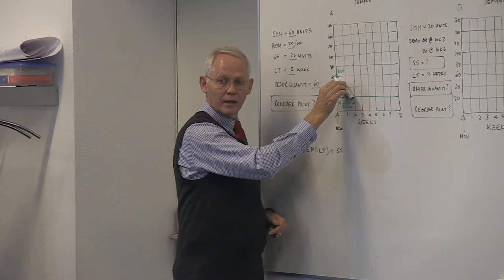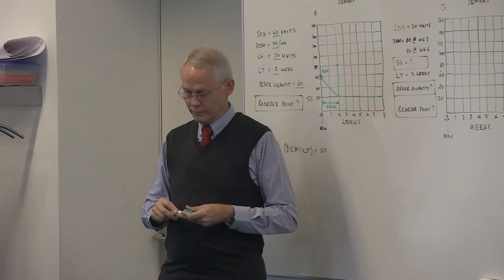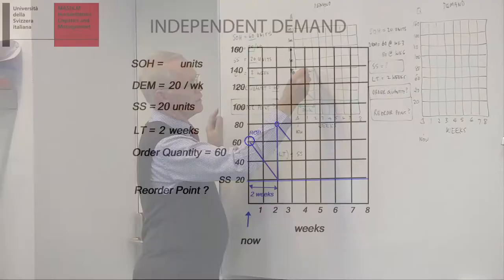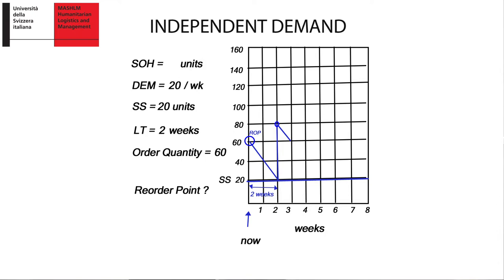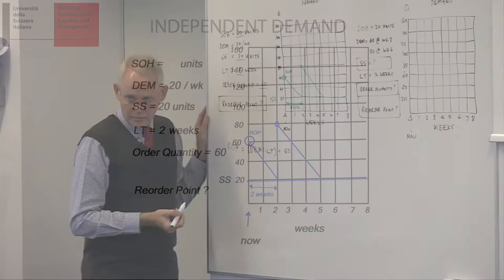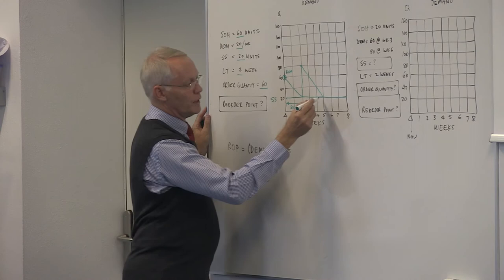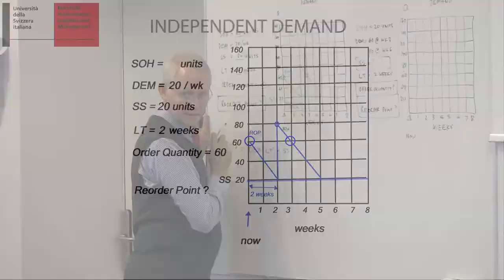So, now I receive my stock. Everything good, I'm standing on 80. My demand is again 20. Here we continue. After one week, it goes down to 60. Week two, 40, 20. Again, I hit safety stock. So, two weeks before that, I need to order. Two weeks, it's again at level 60. That's quite interesting, because my demand is regular. Right? And we do that for the moment.